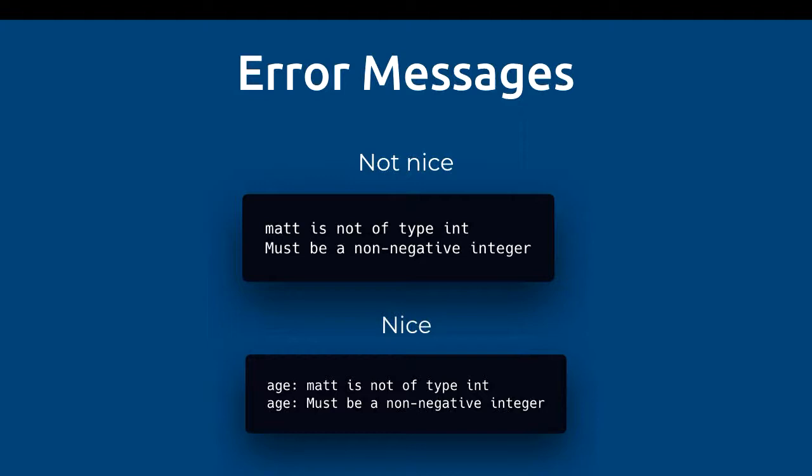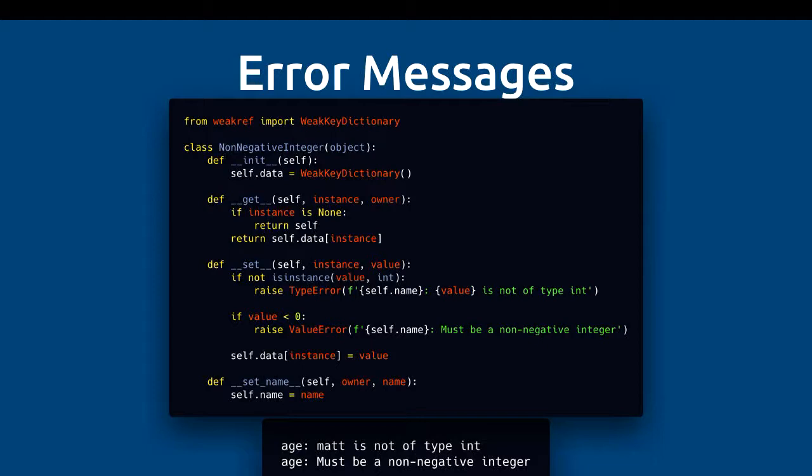Our last descriptor had error messages that just said 'mat is not of type int' and 'must be a non-negative integer'. This isn't particularly useful for beginners, so we'd like to prepend the error messages with the name of the attribute we're trying to set. We can change our NonNegativeInteger descriptor to implement the __set_name__ method, which stores the name on the descriptor itself. Then in our __set__ method, we use f-strings to prepend the name before the error message.